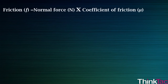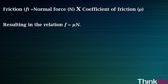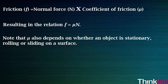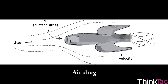Friction depends essentially on two things: the normal force, denoted by the capital letter N, between the two surfaces, and the coefficient of friction, denoted by the Greek letter mu, between the surfaces, resulting in the relation F = mu × N. Note that mu also depends on whether an object is stationary, rolling, or sliding on a surface, resulting in the terms static, rolling, and kinetic friction respectively. Friction experienced in air is often called air drag, and that in a liquid is called viscosity.